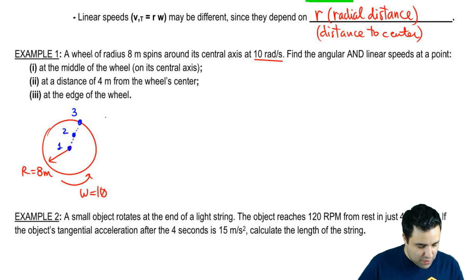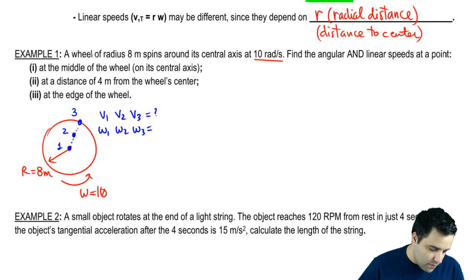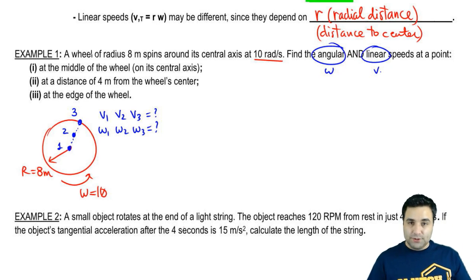So that's our omega is going to be 10 radians per second. We want to know the angular and linear speeds at different points. So I want to know at a point in the middle of the wheel, on the central axis. So we're going to call this point 1. At a distance 4 meters from the center. If the radius is 8 meters, 4 meters is halfway in. I'm going to draw this here. This is point 2. And at the edge of the wheel, point 3. So what we want to know is we want to know v1, v2, and v3. And I want to know omega 1, omega 2, and omega 3. That's what it says. I want the angular, which is omega, and linear, v, speeds at these three points.